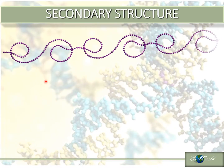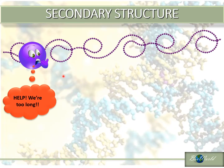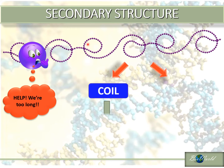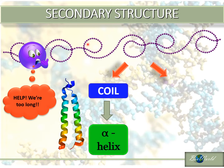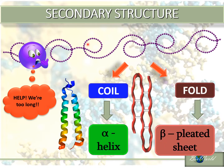Once the primary proteins become too long, they have to organise themselves into a secondary structure. They can do this by either coiling or folding. When they coil, they form a structure called the alpha helix structure. And when these long chain polypeptides fold, they form a beta-pleated sheet.